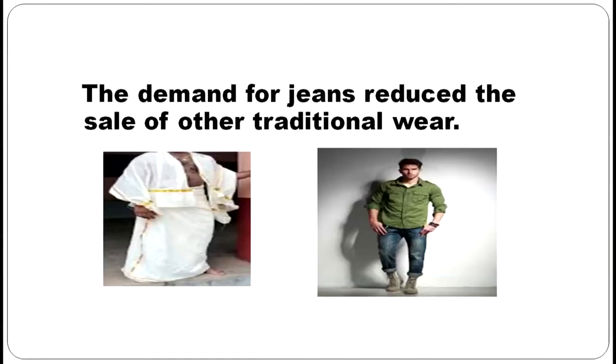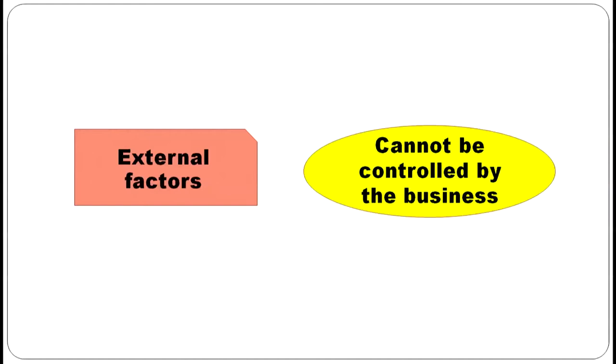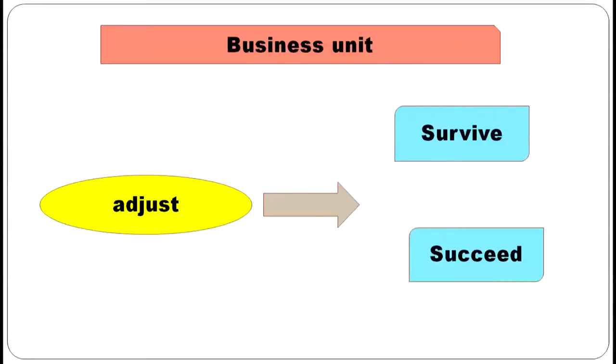In earlier days, we used only traditional types of dresses, and now we are using western style dressing also. The demand for jeans reduced the sale of traditional wears. In business, we have external factors also which cannot be controlled by the business. Usually, a business unit adjusts with the environment in order to survive and succeed in the business field.